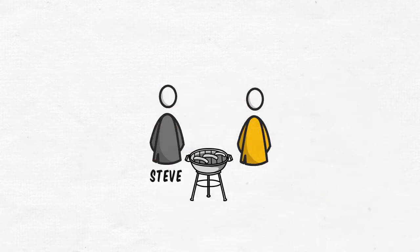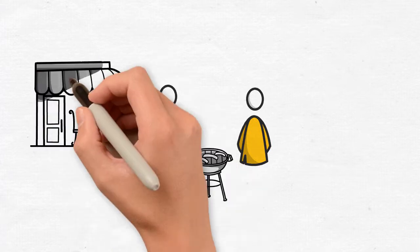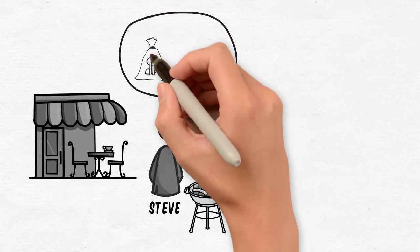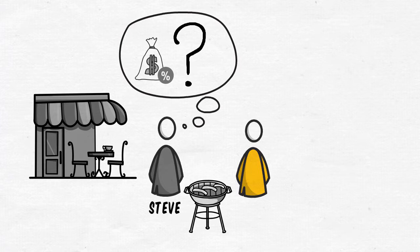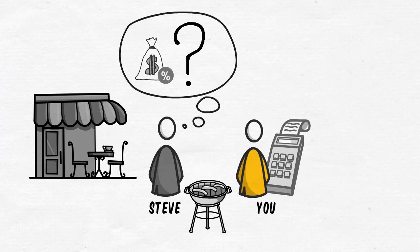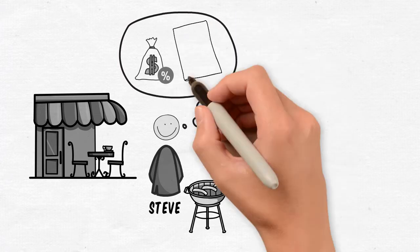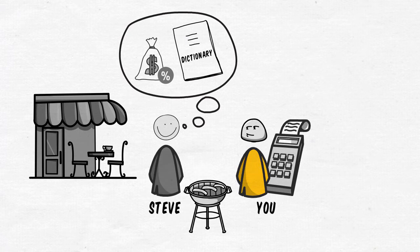So you meet this guy Steve at a barbecue and he tells you that he's just opened a new cafe, but he doesn't know anything about tax compliance and he hasn't found an accountant yet. And so you go, hmm, here is a potential customer right here in front of you. And the next thing you know, he starts asking you, 'Hey, you're an accountant, right? Can you explain all of this stuff in English for me please?'